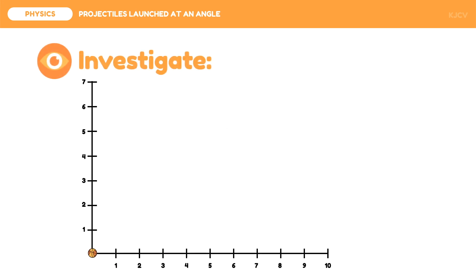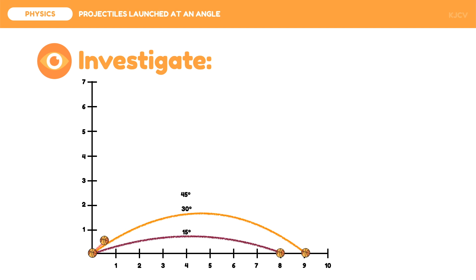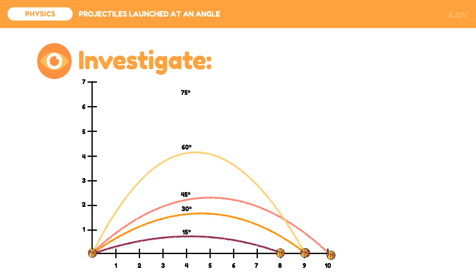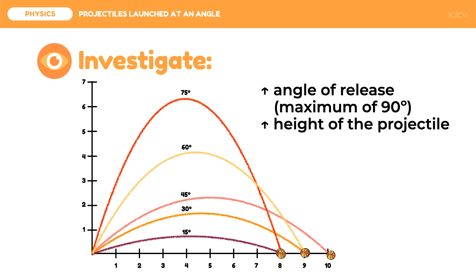Let us now investigate how the angle of release would affect the distances it would cover for both horizontal and vertical components. We have the following angles of release for a comparison: 15 degrees. From this, we can see that the projectile launched at 75 degrees is the highest, while the one launched at 15 degrees is the lowest. This means that as the angle of release nears 90 degrees, the height of the projectile increases.